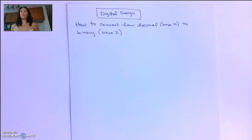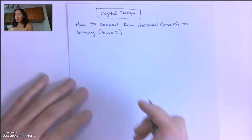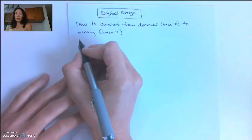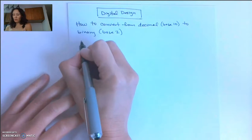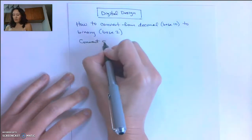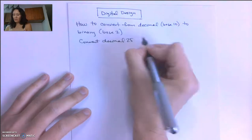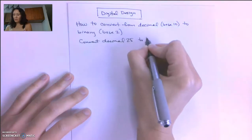Now let's use what we learned in the iterative division algorithm video to convert from decimal base 10 to binary base 2. So let's do an example. Let's convert decimal 25 to binary.